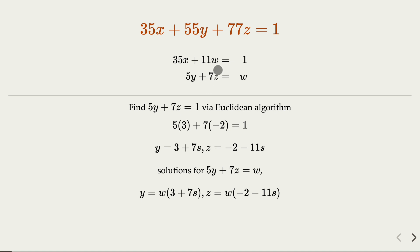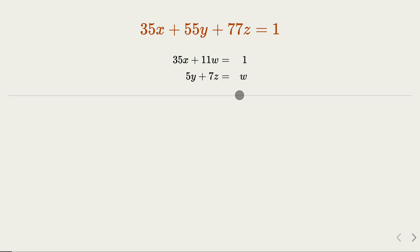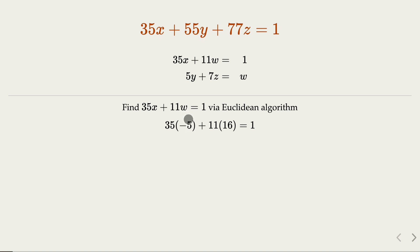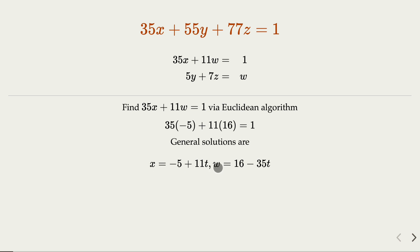Now what is w? W is the solution for the first equation, 35x + 11w = 1. The GCD is 1, and using the Euclidean algorithm we find the particular solution is negative 5 and 16. So a particular solution is found, and the general solution gives x and w in terms of integer parameter t. Combining the two results, everything can be expressed in terms of s and t.